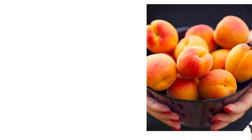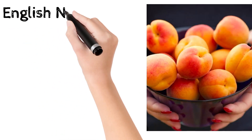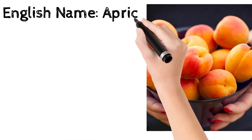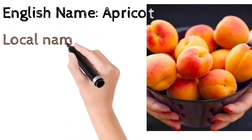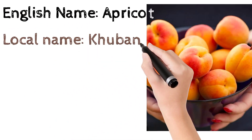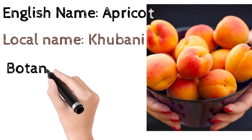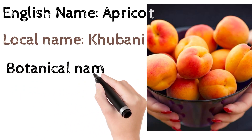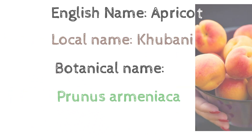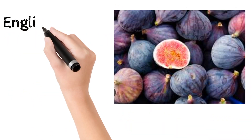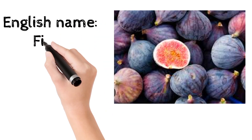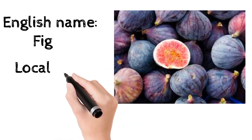The botanical name of apricot is Prunus armeniaca. The botanical name of fig is Ficus carica.